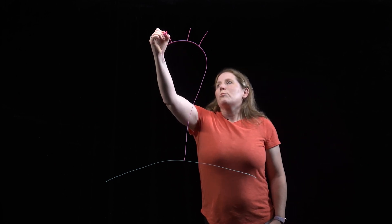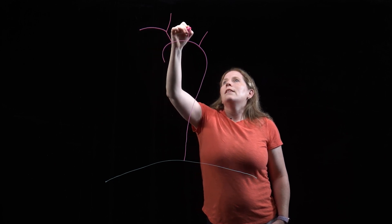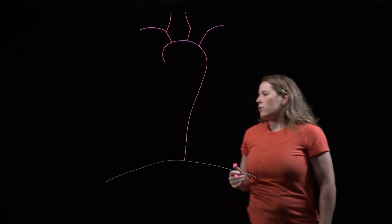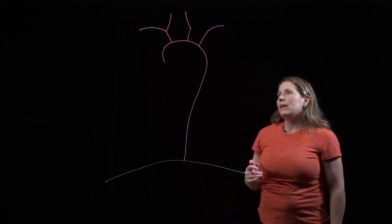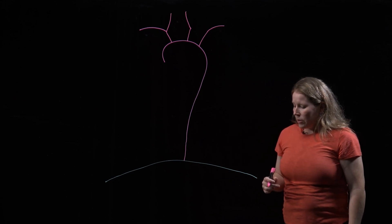We know that that first branch, the brachiocephalic trunk, is going to divide again and this gives us symmetry. So we end up with two common carotid arteries heading up towards the head and neck, and two subclavian arteries that are heading out towards the upper limbs.